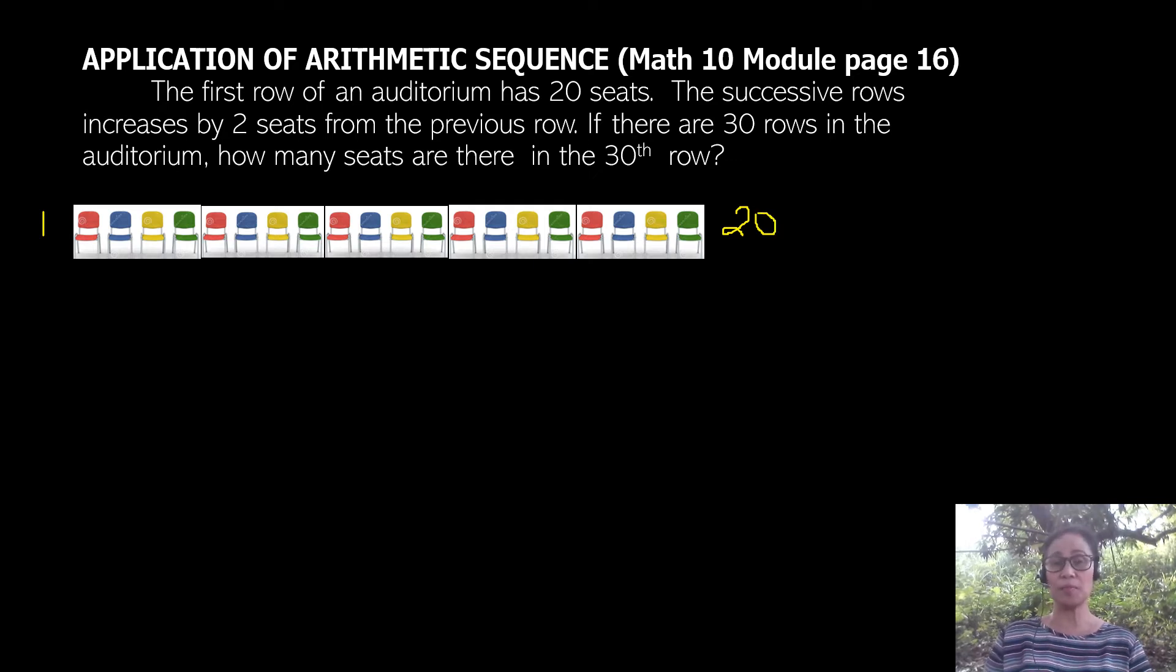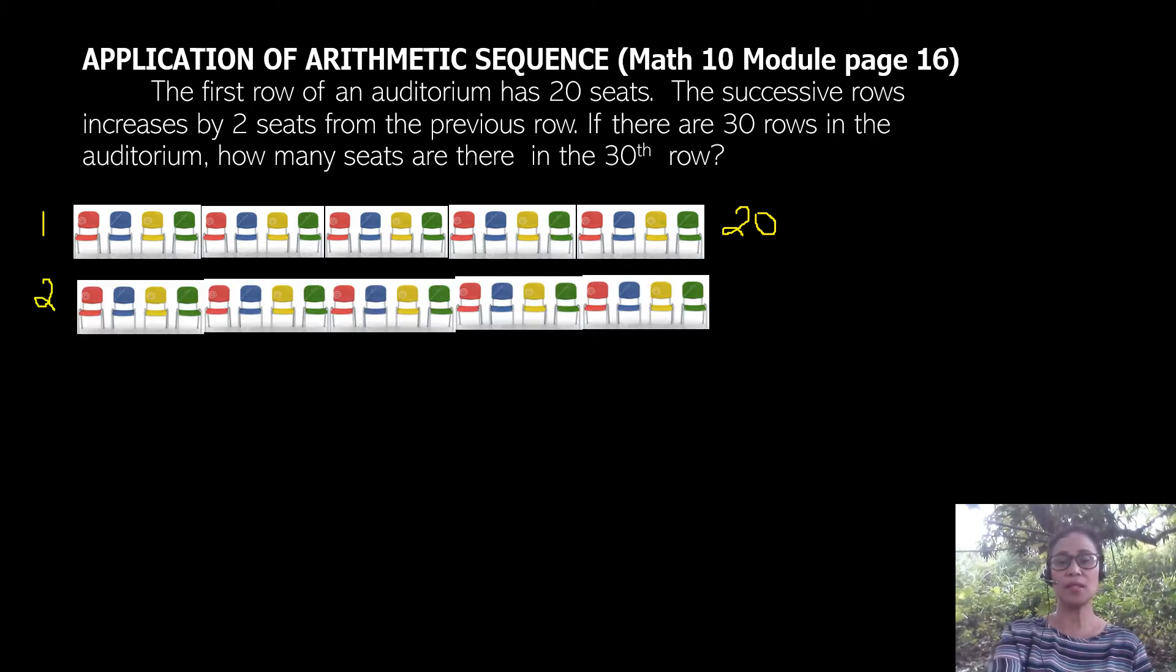It says in the problem that the second row has to increase by 2 seats. So the second row should have 20 seats and an additional 2 seats. Let's write that this is 20, then we have plus 2 seats.